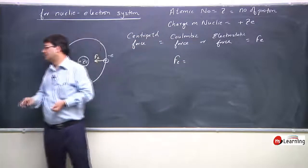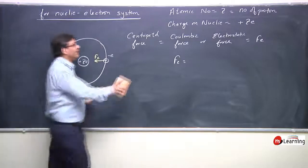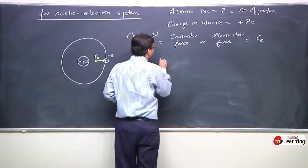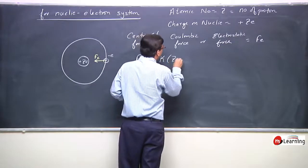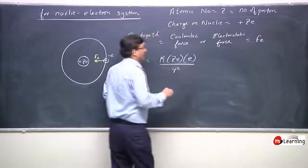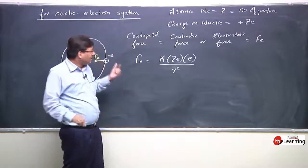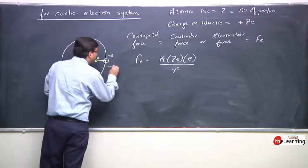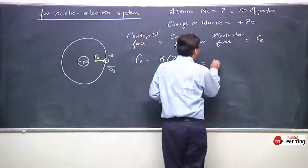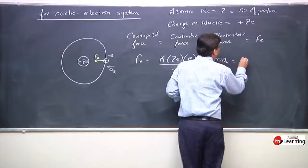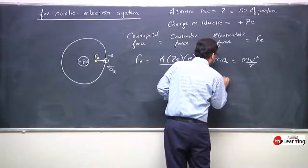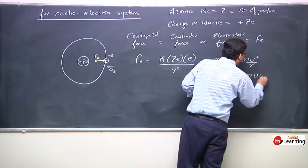This electrostatic force, denoted Fe, equals k times Ze times e divided by r squared: Fe = kZe²/r². This would provide the necessary centripetal force, equal to m times omega squared times R, or m times V squared by R, or m times V times omega.